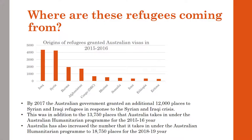A question one might ask is: where are these refugees coming from? Most of the refugees arriving in Australia are coming from countries that have recently experienced wars or that are still in a state of war. The two countries where the most refugees are coming from are Syria and Iraq. This isn't surprising because these countries have been going through civil wars where there is a lot of violence and the threat of persecution by ISIS is prevalent.